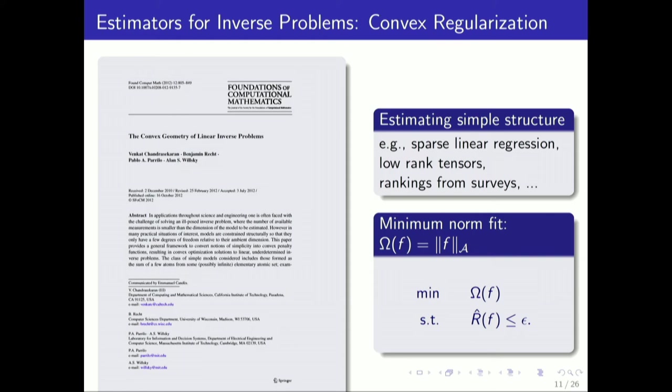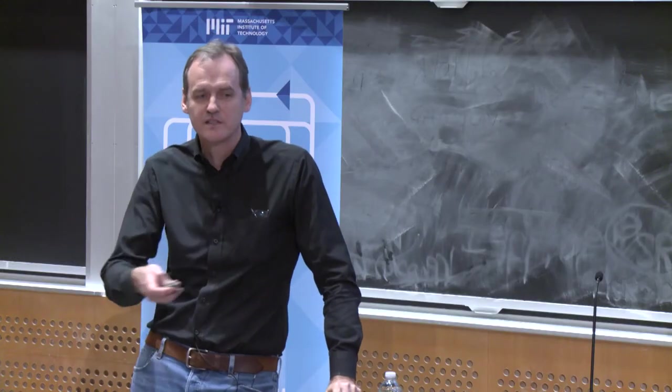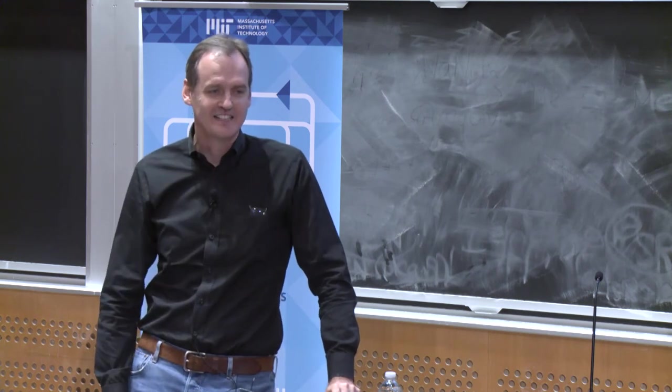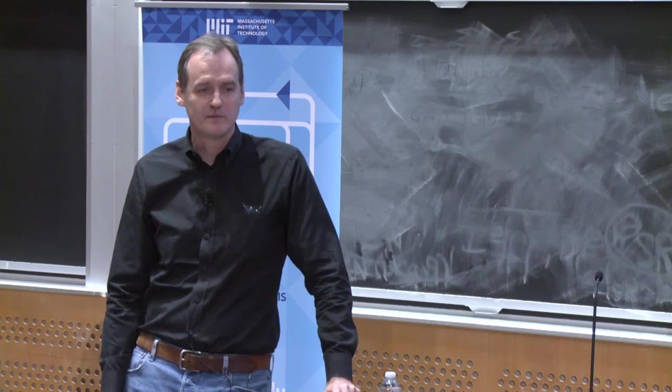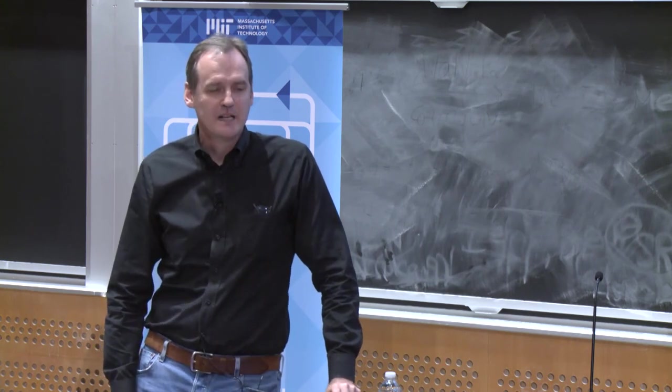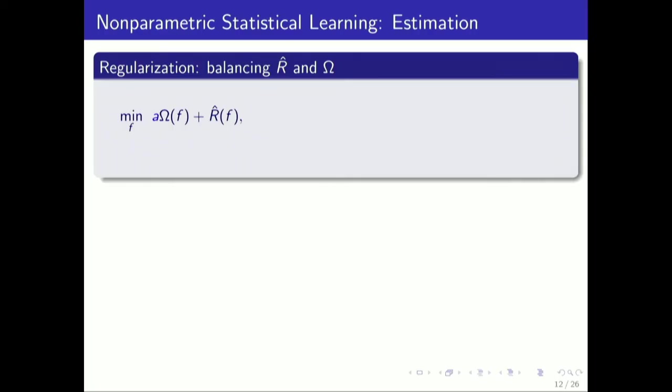The complexity measure here is a particular norm, an atomic norm, based on whatever this notion of simplicity is. The optimization problem that emerges is minimize this complexity of the function, subject to a constraint that the empirical risk, the fit to the data, if you like, is better than something. This is very classical, and I particularly like this example, but this style of optimization problem is a typical thing.